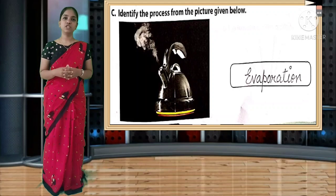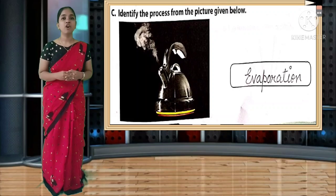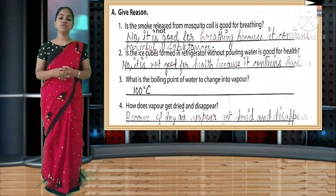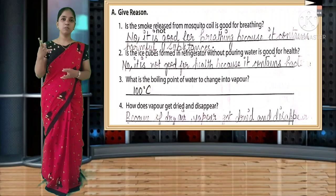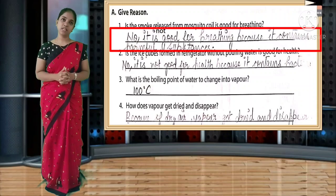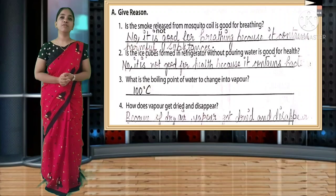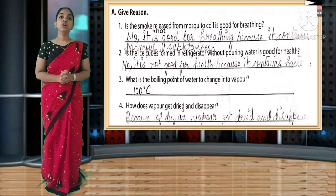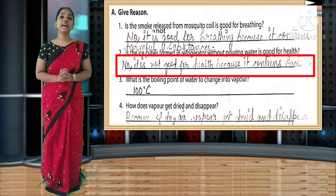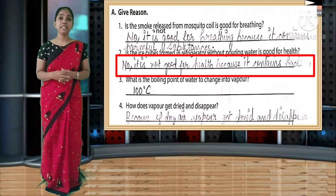Identify the process from the picture: you can see from the kettle the water is getting evaporated - the answer is evaporation. Give reason. First: is the smoke released from a mosquito coil good for breathing? No, it is not good for breathing because it contains harmful substances. Second: are ice cubes formed in the refrigerator without pouring water good for health? No, it is not good for health because it contains bacteria.